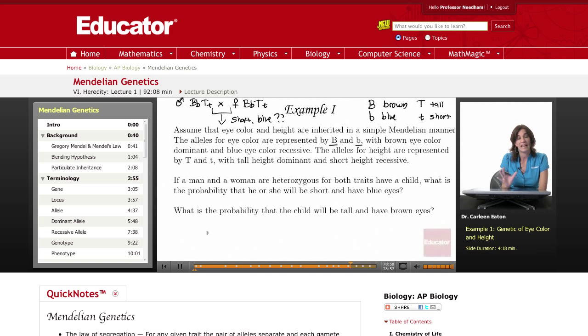Well short and blue eyes, since we're assuming simple Mendelian inheritance these assort independently, they're independent events and I can use my multiplication rule. So first I'm just going to address short, chances of being short. Well height is TT times TT, dad is heterozygous, mom's heterozygous.